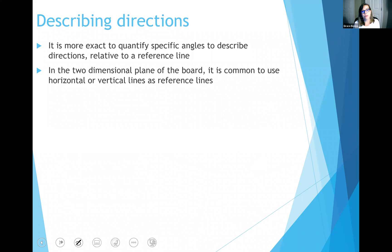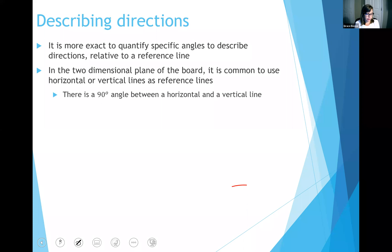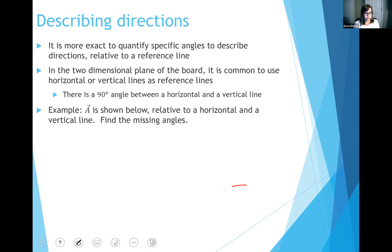In order to do that, we generally use some kind of reference point or reference line to define directions. In the two-dimensional plane we'll be working in a lot, the convention is to use horizontal or vertical lines, place those lines at the tail of your vector, and describe the angles relative to those lines. Remember that by definition, horizontal lines and vertical lines are 90 degrees from each other — horizontal is perpendicular to vertical.